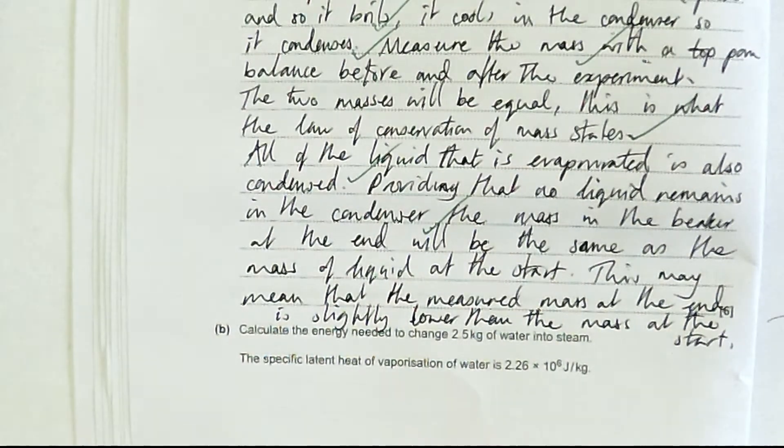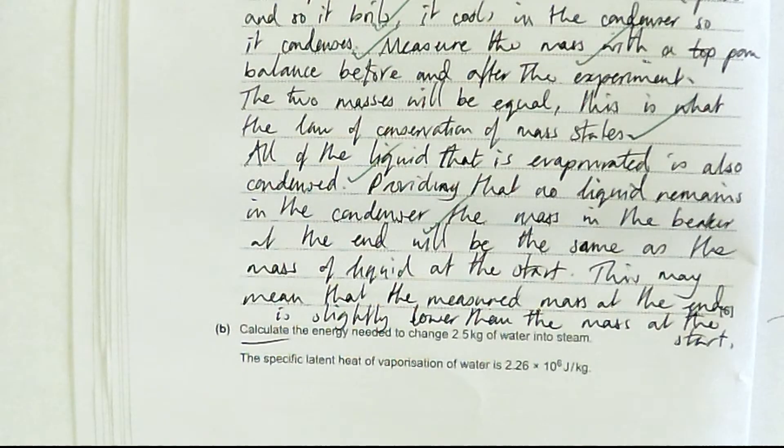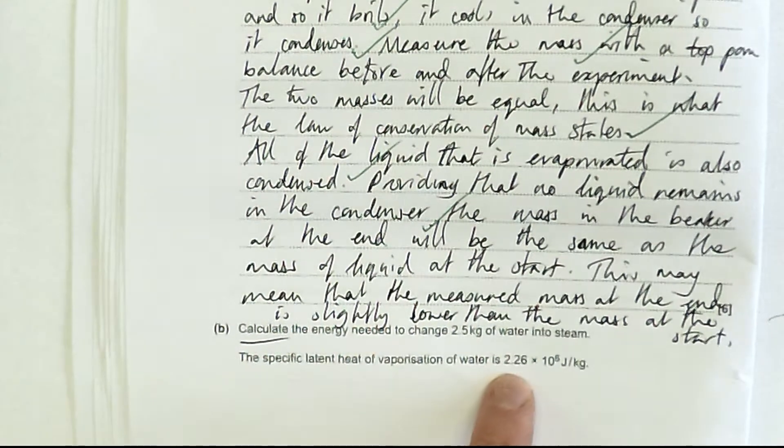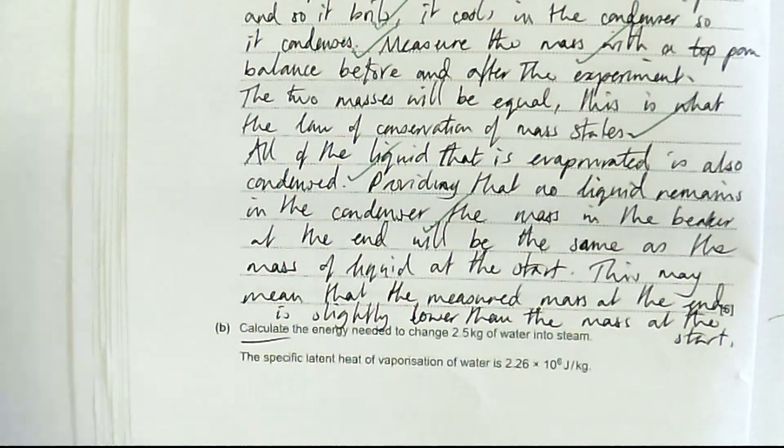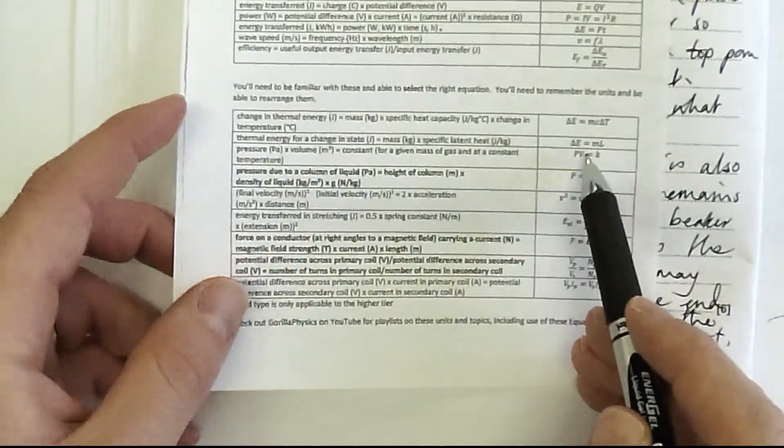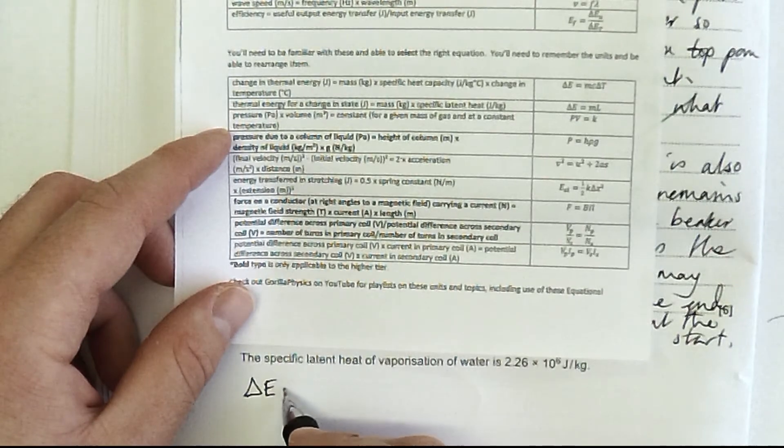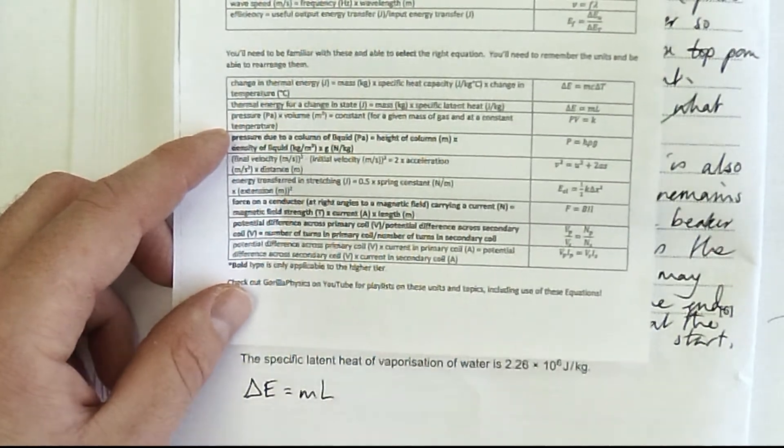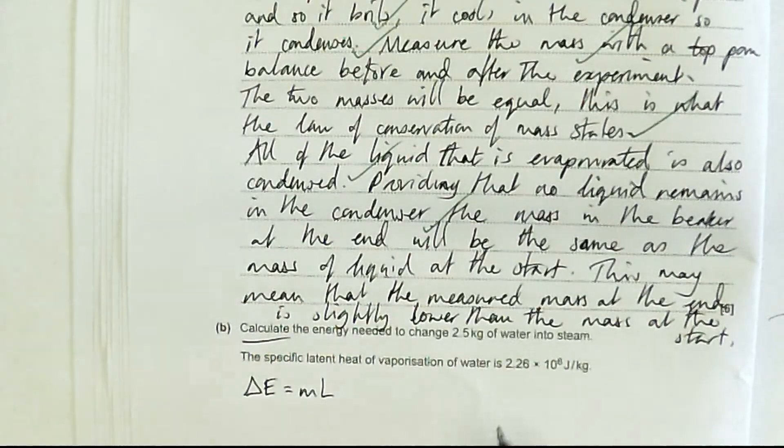Calculate the energy needed to change 2.5 kilograms of water into steam. The specific latent heat of vaporization of water is 2.26 times 10 to the 6 joules. I need an equation, and luckily this is on the formula sheet. The energy for a change of state is equal to the mass times the specific latent heat. Now I just need to put numbers in.